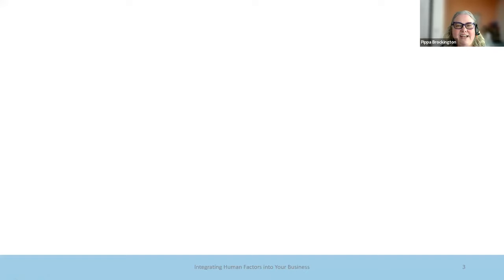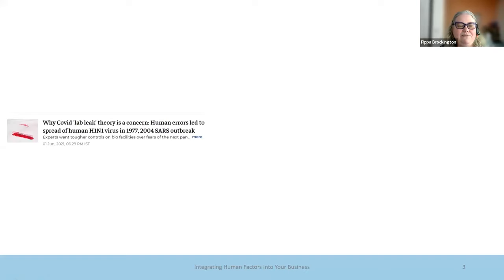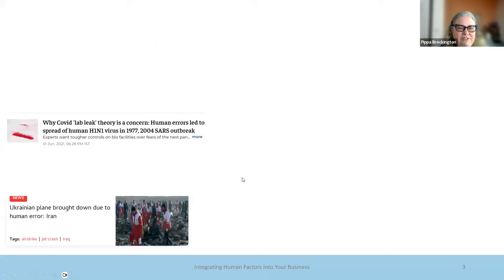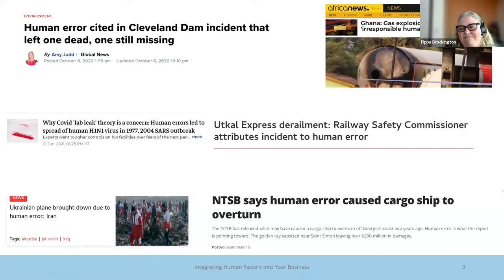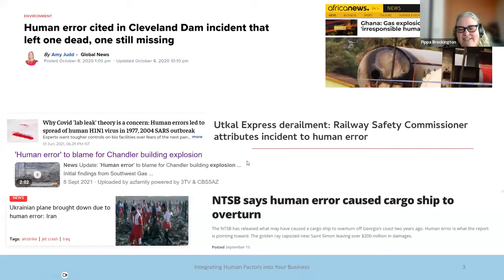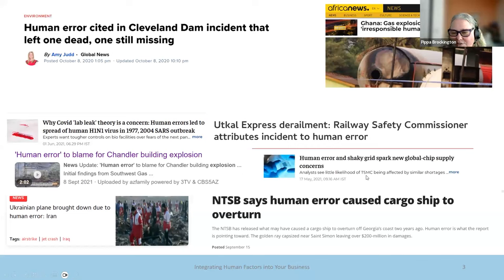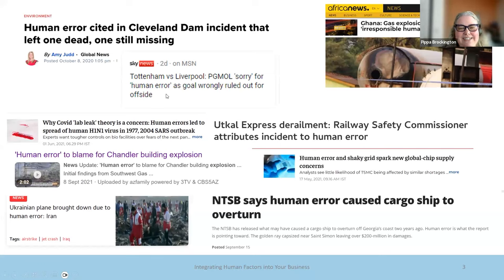So why is human factors important? Well, if you have ever searched online for human error, you will find that human error is the cause of everything that ever goes wrong in the world. So these are all news stories that I've found during a general Google search on human error. So apparently virus outbreaks are a result of human error, plane crashes, train crashes, ships turning over, dam failures leaving fishermen dead, industrial gas explosions, domestic gas explosions, and apparently more important than anything else, supply chain problems and incorrect outcomes of football matches, which I've been told by my nearest and dearest is really important.